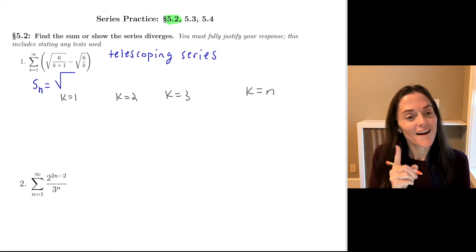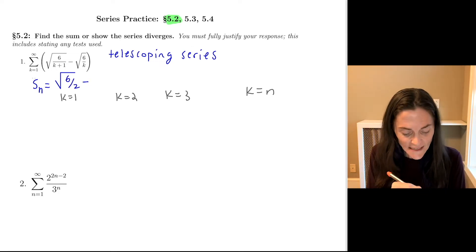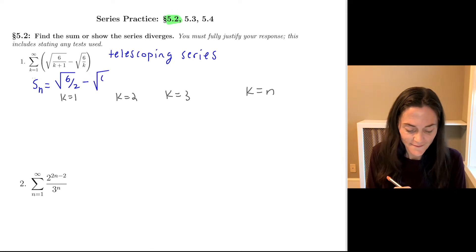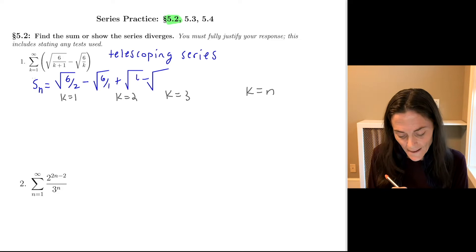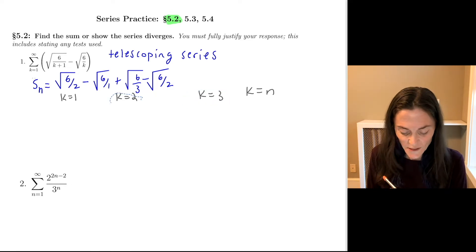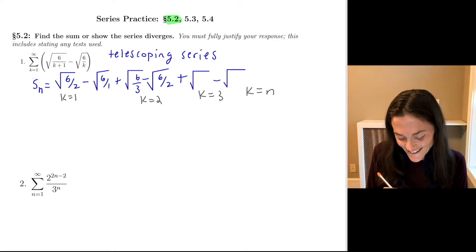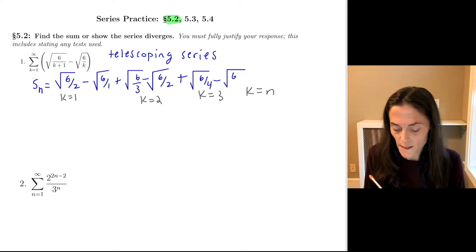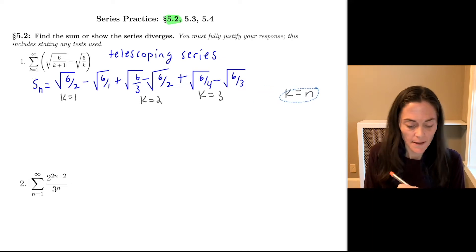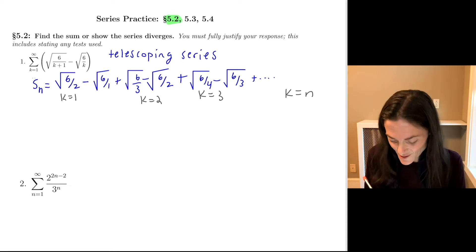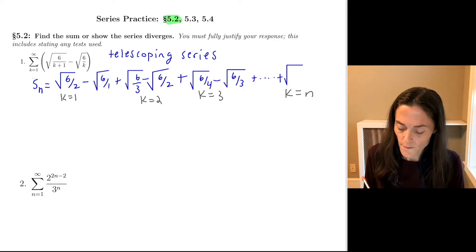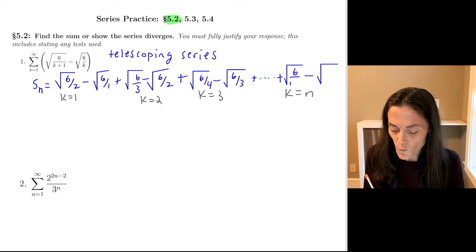For k=1 we have √(6/2) minus √(6/1). For k=2 we have √(6/3) minus √(6/2). For k=3 we have √(6/4) minus √(6/3). The nth term is √(6/(n+1)) minus √(6/n).